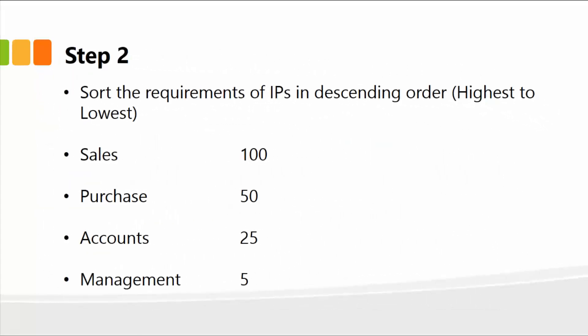In step two, we simply sort the requirements of IP addresses in descending order, highest to lowest. Which department has the highest number of computers? Sales with 100. Next is the purchase department with 50 computers. Accounts has 25, and management has five. So just create a simple descending order list.